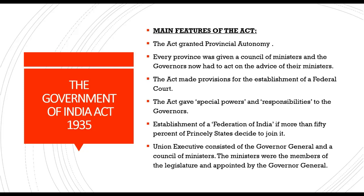The act gave special powers and responsibilities to the governors. There was provision for the establishment of a federation of India if more than 50% of princely states decided to join it. However, it never happened because the princely states did not agree to join. A union executive consisted of the governor general and a council of ministers appointed by the governor general.